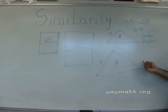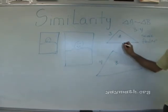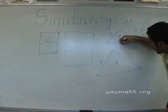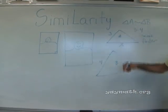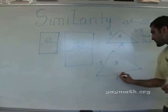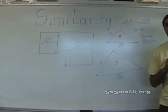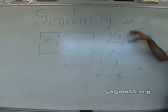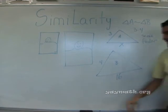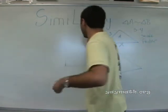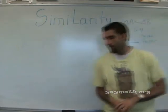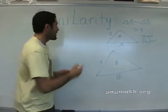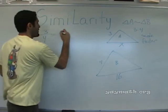Now let's get into it. Let's say I wanted to solve for x here — let's say this side is 16. We need to set up a proportion to solve for x. Can anyone set up a proportion? Three over four equals x over 16. Good — three over four equals x over 16.